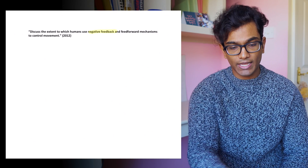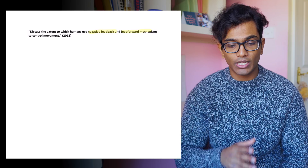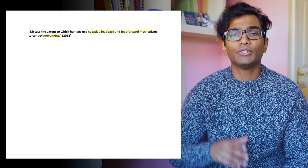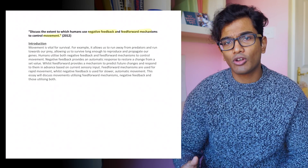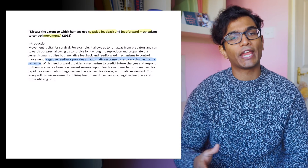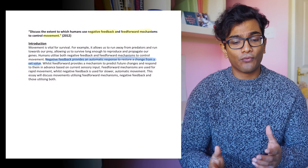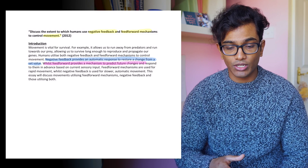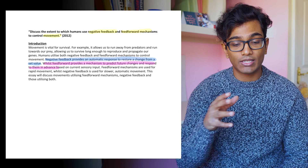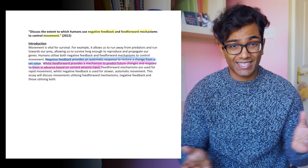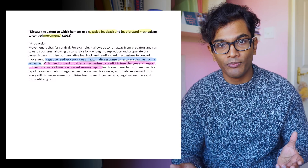So what are the key words there? The key words for me would be negative feedback, feedforward, and movement. Once you've read the question and decided what the key concepts are, you need to define them. In my introduction I would say: negative feedback is an automatic response to restore a change from a set value. For feedforward I might say it provides a mechanism to predict future changes and responses based on current sensory input. Movement is a bit tricky because there's no point defining movement as it is — everyone knows what movement is.